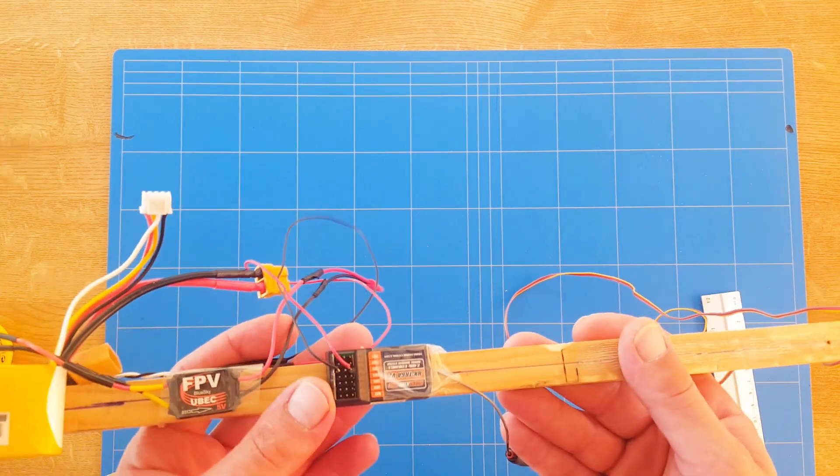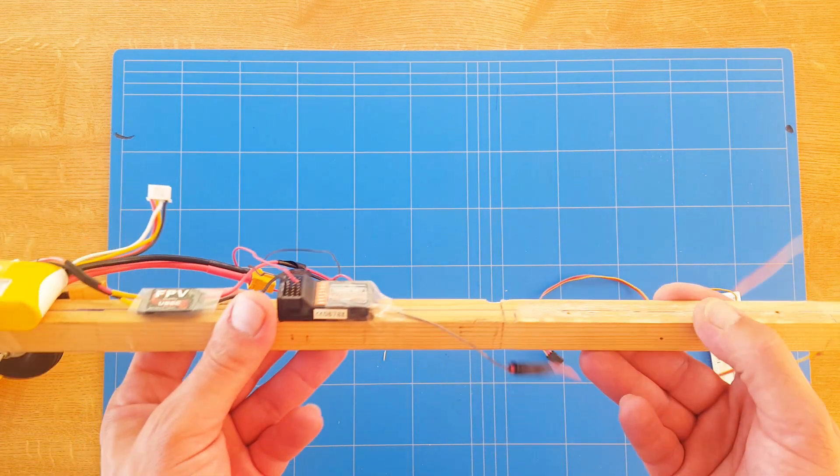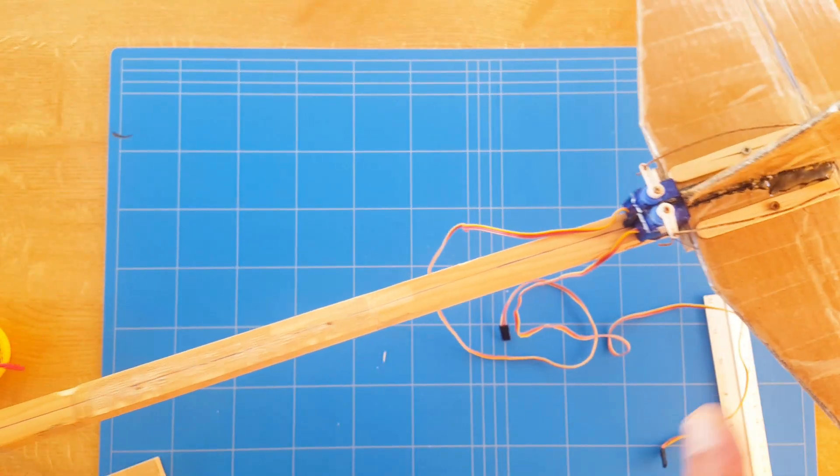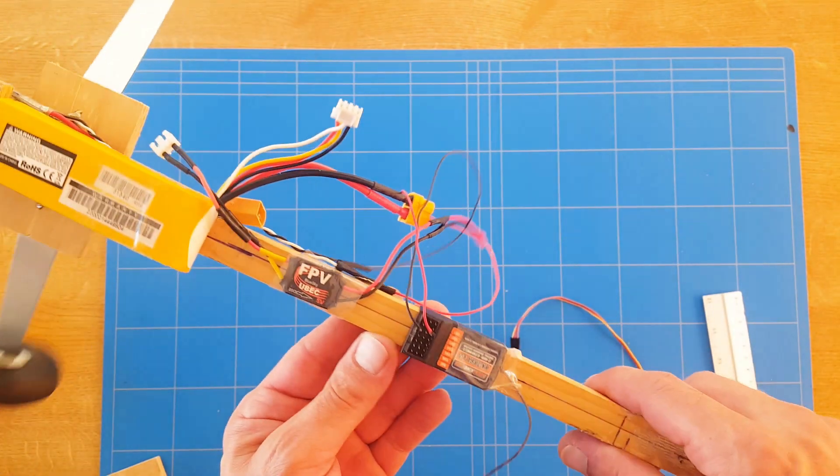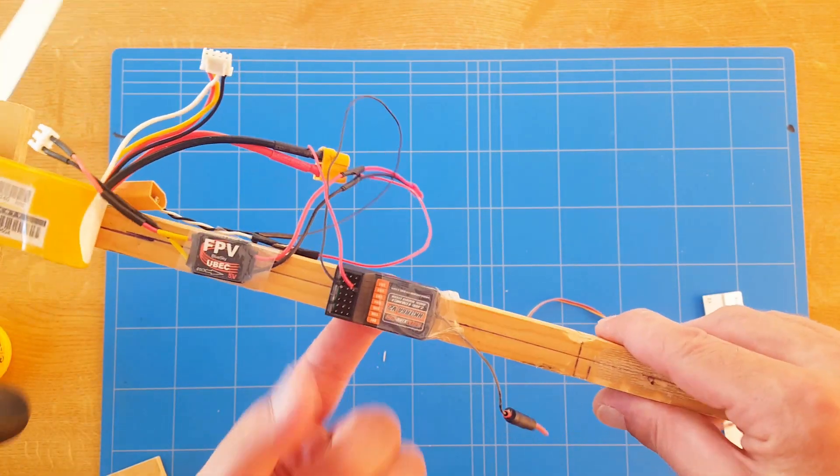And then we're going to add and find the CG of the body. Because now we have all the weight, all the electronics—everything is on the body. Now it's just finding where does the body balance.